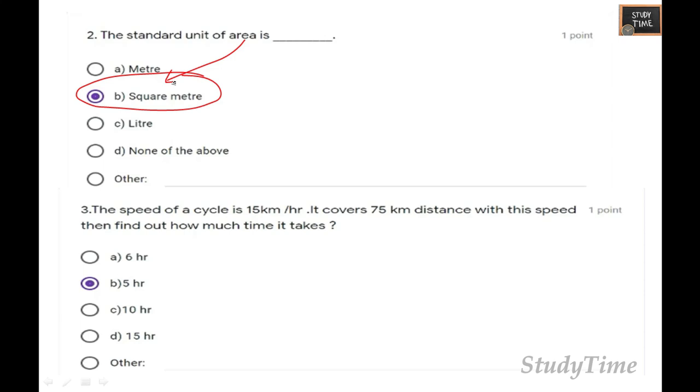It takes 75 kilometer distance with this speed. Find out how much time it takes. For time, you have to divide 75 kilometer divided by 15, so you will be getting 5 hours. The answer is 5 hours.